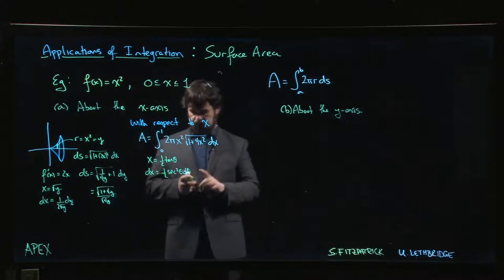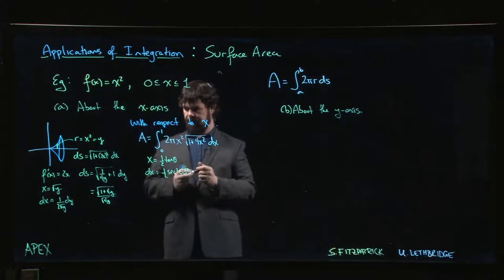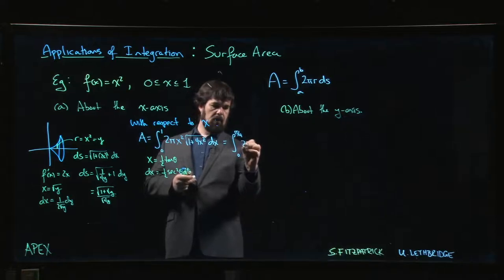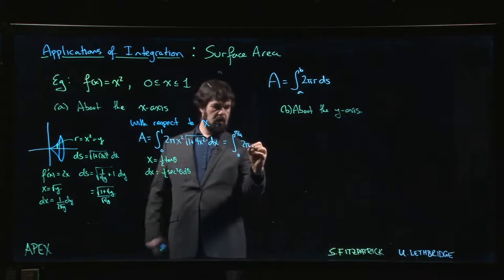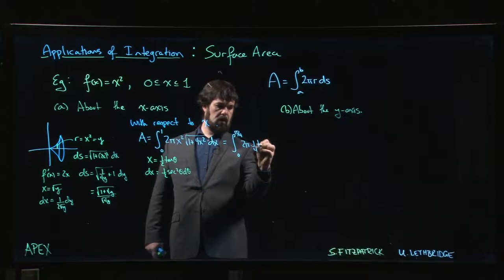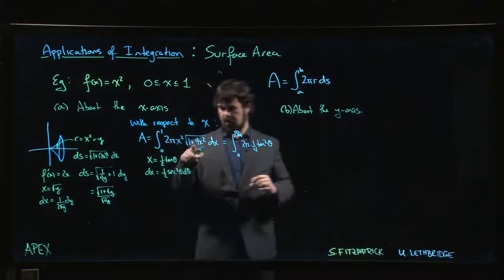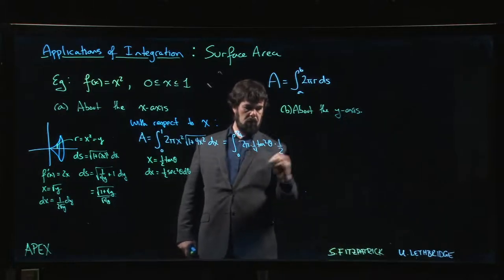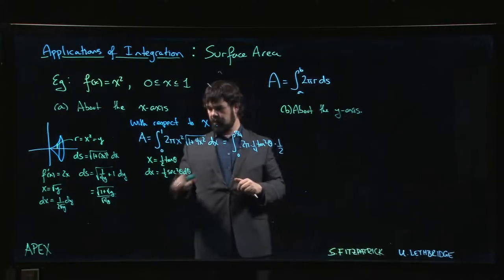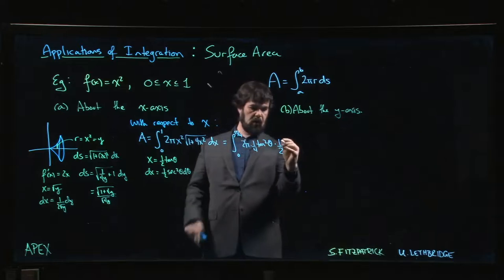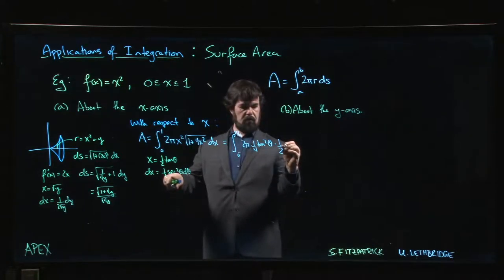If we do that one, we're going to get the integral from 0 to π over 4, 2π times 1 quarter tan squared θ. This is going to become one half, so if I put that in I'm going to get 1 plus secant, sorry, 1 plus tan squared which becomes secant squared, take the square root we have secant θ, and then we get two more from there, so actually one half times another one half times secant cubed θ dθ.